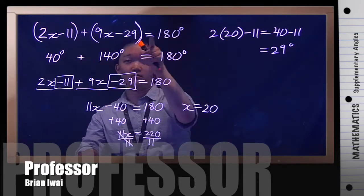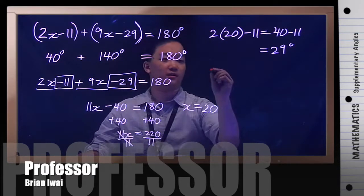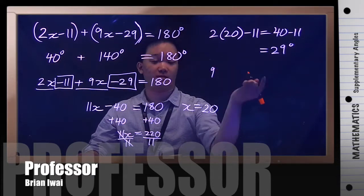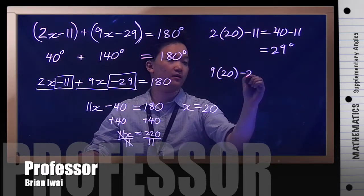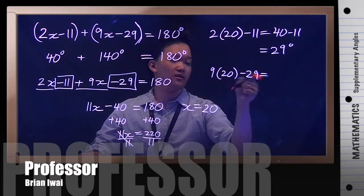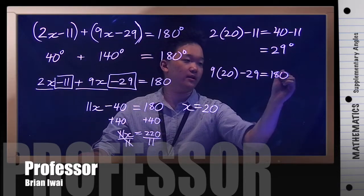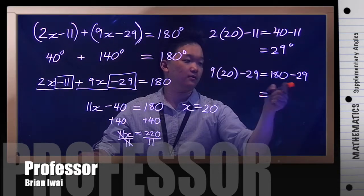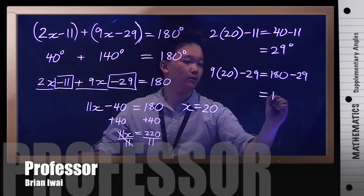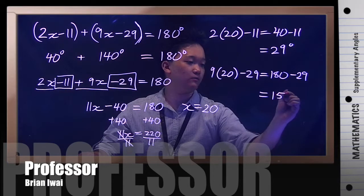And then our other angle is 9x minus 29, so again I'm going to write 9 but I'm not going to write x, I'm going to write 20 minus 29. 9 times 20 is 180 minus 29, and if you do the subtraction you would get 151 degrees.